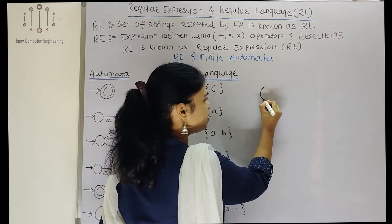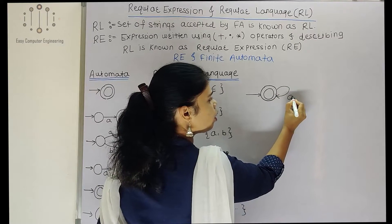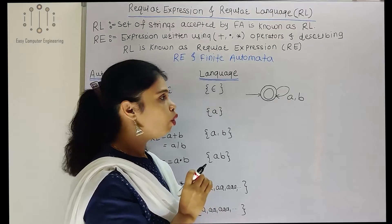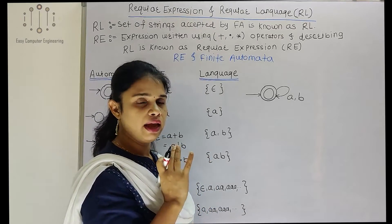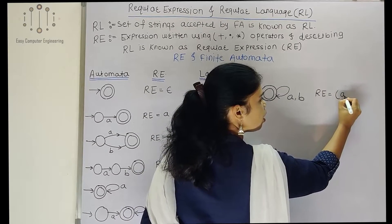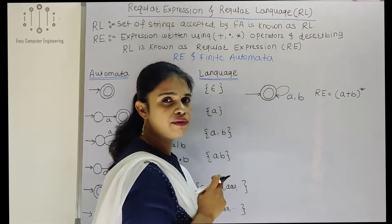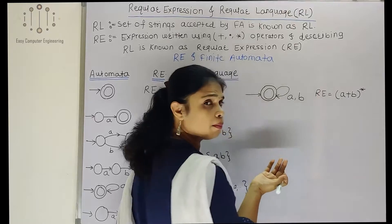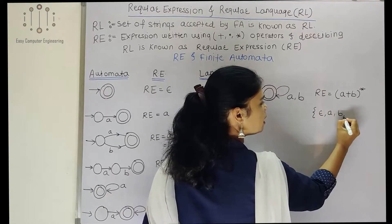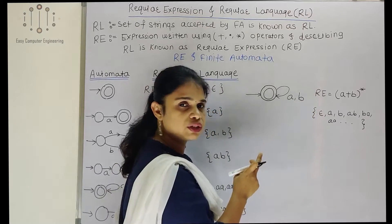Let us consider a finite automaton where the initial state is also the final state, and I am taking 'a' and 'b' as input — this is the finite automaton for any string over sigma {a, b}. For this, the regular expression is '(a or b) star'. The star is used because the initial state is also the final state. The language accepts epsilon, then 'a', 'b', 'ab', 'ba', 'aab' — any combination of 'a' and 'b'.